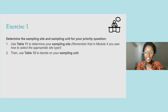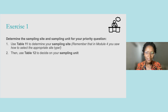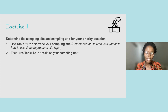In this first exercise, please determine both the sampling site and sampling unit for the priority program question you formulated in Module 1. Use Table 11 to help you determine your sampling site — for instance, will your sampling site be a village or a farm work site? Then use Table 12 to decide on the right sampling unit — for example, will it be a house, a cattle shed, or both? Please pause the video now. When you have finished the exercise, you can continue.